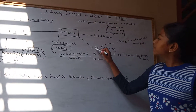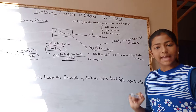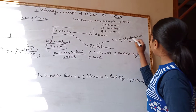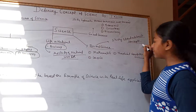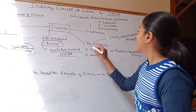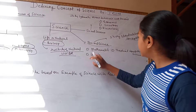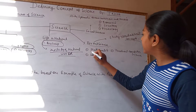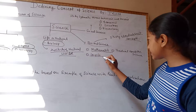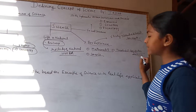Next is Formal Science. In Formal Science, we study abstract or in-depth concepts. Here we also study Mathematics, Logic Science, and Theoretical Computer Science.